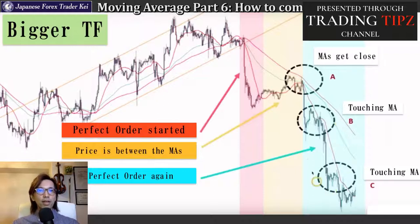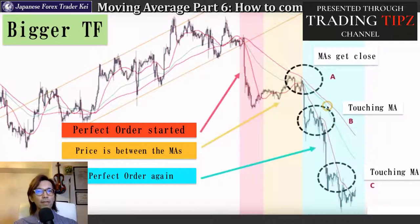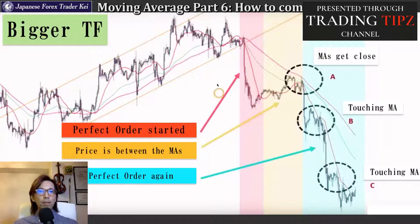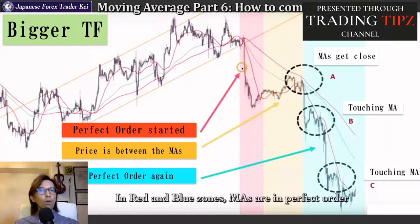On this blue zone right here, the market is in a clear downtrend, as you can see the perfect order of the moving averages. On the yellow area, two MAs are pointing down but one MA — the short-term MA — is pointing up and candles are right in the middle of the MAs, so the market is consolidating for the next momentum. But on this blue or red part right here, all the MAs from short to mid to long-term are all pointing down, meaning the major trend on this bigger timeframe is a clear downtrend.